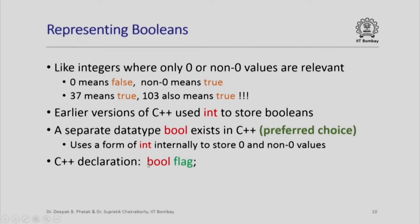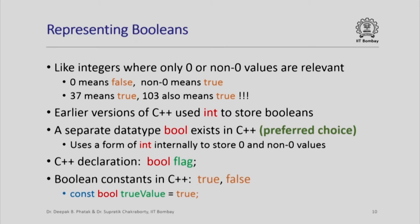To declare a Boolean in C++ you write bool followed by the variable name — for example, bool flag. The Boolean constants in C++ are true and false: false is guaranteed to be 0, and true is guaranteed to be something other than 0, though it may not be 1. You can define constant Boolean values like const bool true_value = true, meaning its value cannot be changed during the program.